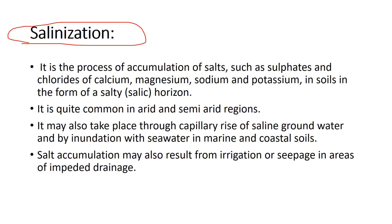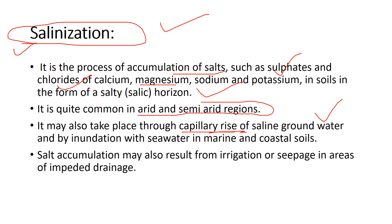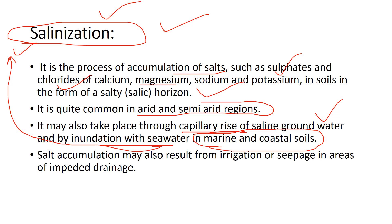The next process is salinization — the accumulation of salts such as sulfates and chlorides of calcium and magnesium. When such salt accumulation occurs, the soil turns saline. Salinization is quite common in arid and semi-arid regions and may also take place through capillary rise of saline groundwater or by inundation with seawater. Sea water, being a huge reservoir of NaCl, can intrude into coastal and marine soils and convert them to saline soils.